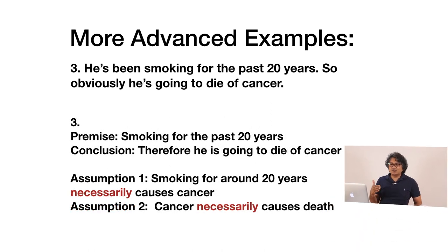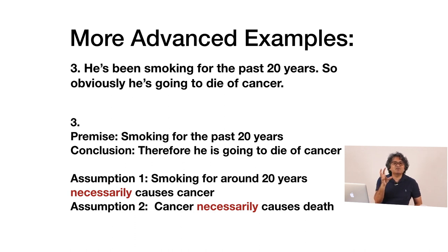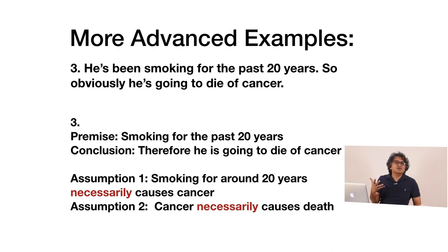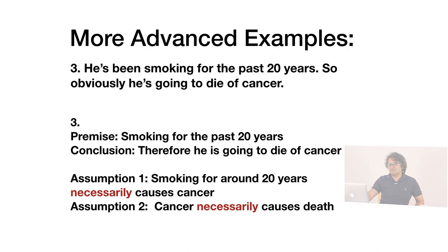The second assumption is that cancer necessarily causes death. If you prove either one of these assumptions wrong, you have weakened the argument. If you prove one or both correct, you have strengthened the argument. Beyond this, the only thing that will get difficult is the language of the CR passage. Fundamentally, CR is a game of reading comprehension skills plus logic skills, but logic is the easier part. Comprehension is the bigger challenge for most people.